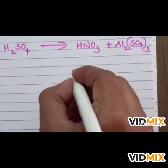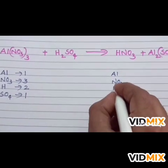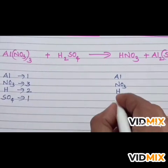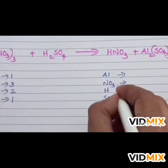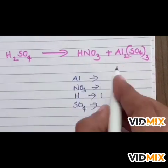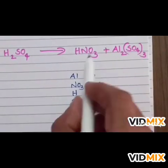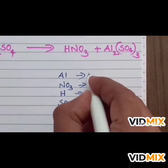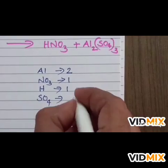Similarly in RHS side, Al, NO3, H and SO4, we are trying to find the number of atoms present. Here from the equation you can write H is equal to 1, NO3 is equal to 1. We are considering NO3 as a whole. Then two aluminum atoms and SO4 is considered as a whole so 3.